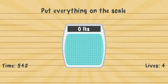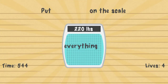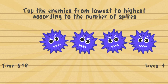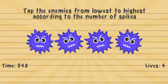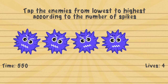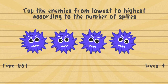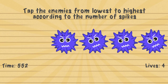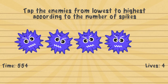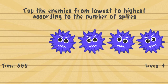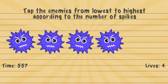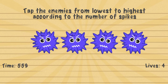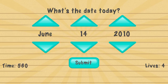Put everything on the scale — you take the word 'everything' and put it on the scale: 220 pounds. Tap the enemies from lowest to highest according to the number of spikes — you can just estimate it. This one's the lowest, then this, this, and that. First try.